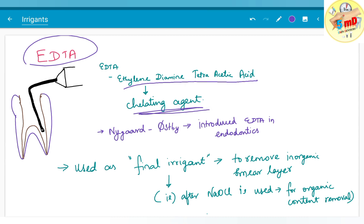Nyegard and Orspi were the first people to introduce EDTA in endodontics. It is used as the final irrigant. As the name suggests, it is used in removing the inorganic smear layer.